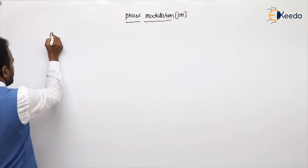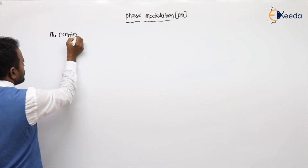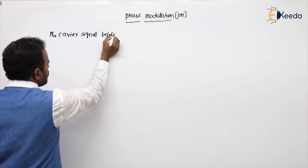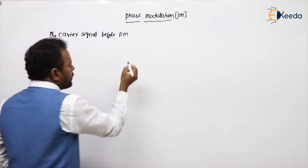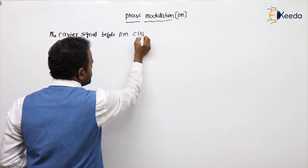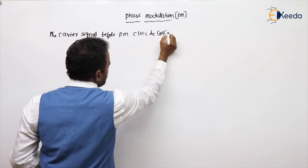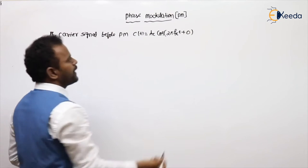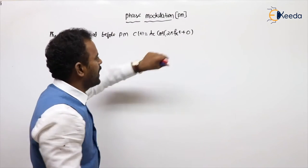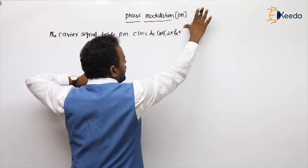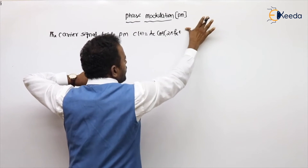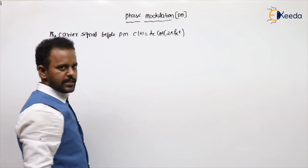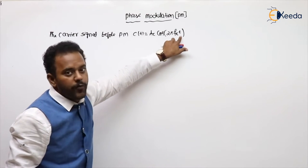I am writing the carrier signal before phase modulation. Before modulation, there is no change. I am taking phase as 0, just for your understanding. Being 0 means nothing is added. In any equation, phase means the value adding to 2πf_c·t is called phase. Initially, I am taking a 0 phase.